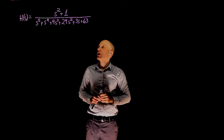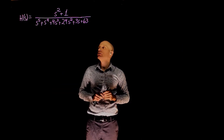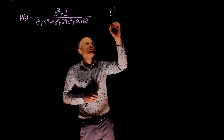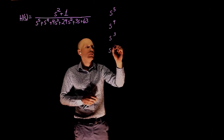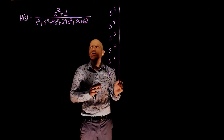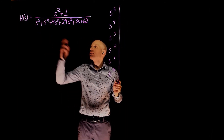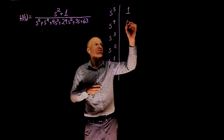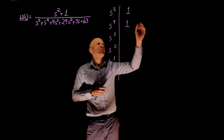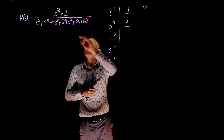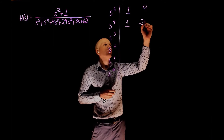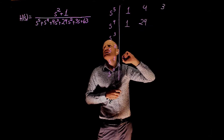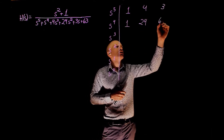In this last example, we have a fifth-order polynomial. Let's start the Routh array from s to the power of 5, all the way to s to the power of 0. Filling in the coefficients: s⁵ is 1, s⁴ is 1, s³ is 4, s² is 24, s¹ is 3, and s⁰ is 63.